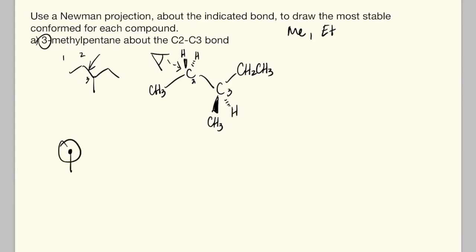The front carbon is this dot. We see a methyl group pointing down and two hydrogens coming off to either side. On the back carbon we see an ethyl group pointing up, a hydrogen pointing to the bottom left, and a methyl group pointing to the right.